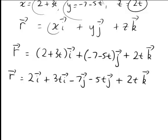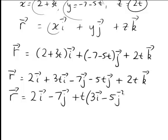Now if we group all the terms with t and all the terms without t, the ones without t are 2i minus 7j. Then the rest of the terms have t in them, so let's take t out as a common factor: t times 3i minus 5j plus 2k.